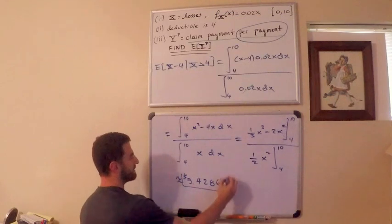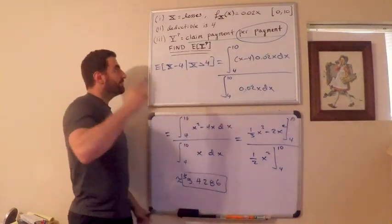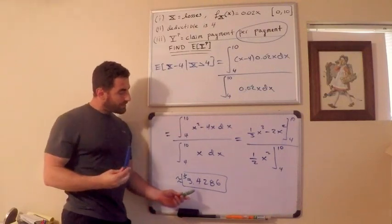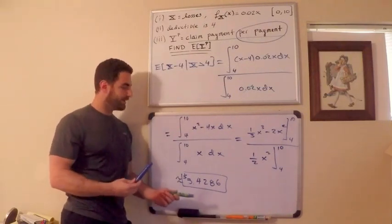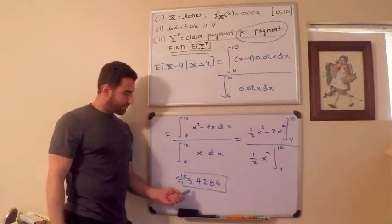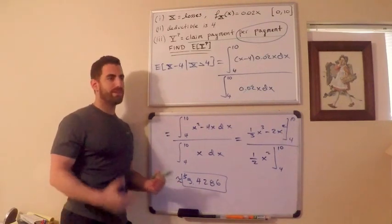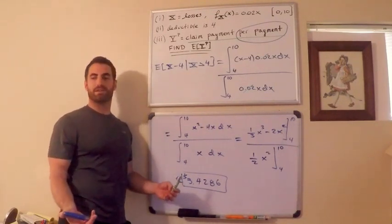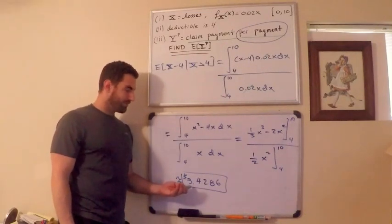I'm just going to put a dollar amount here to think about what it actually would mean. What we're trying to say here is that if I make a payment, I'm the insurance company, if I make a payment, what would the average payment be? $3.43. Given that I make a payment, given that the loss exceeds the deductible, how much am I actually going to pay as an insurance company? I'm going to pay $3.43.